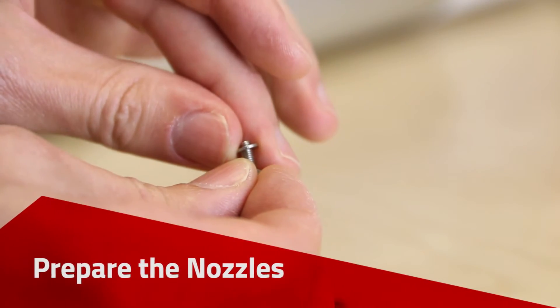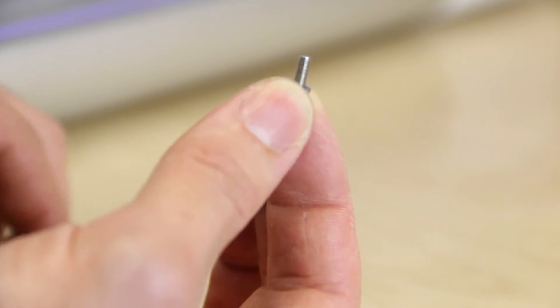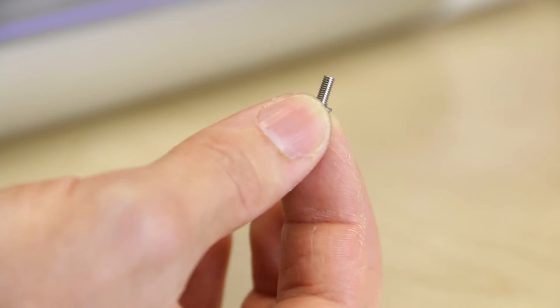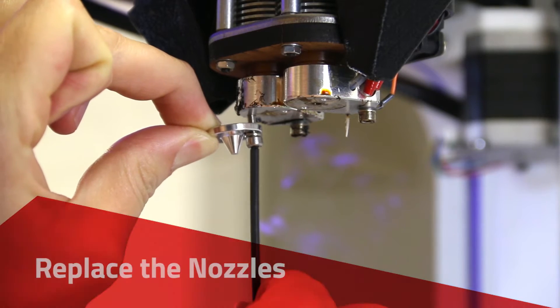Insert the washer onto the new nozzle screw. Insert the screw and washer into the nozzle. Hold the screw in place with the Allen wrench and bring the nozzle up to the heat block.